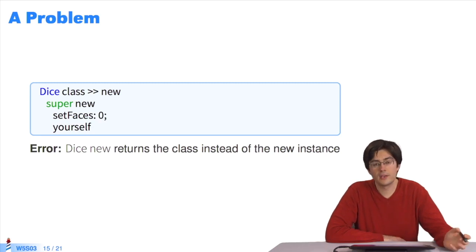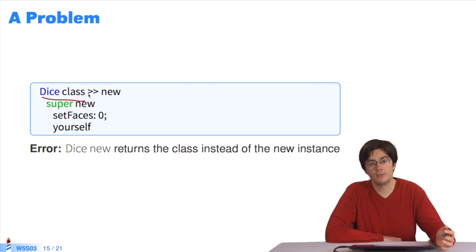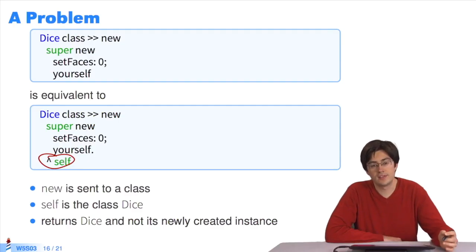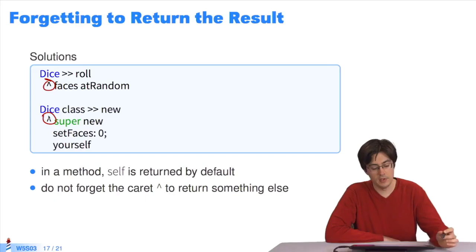Not the result of sending at random to the faces collection. So, the same problem in a slightly different example. Here, we are creating a new method in the dice class. So, in dice class, we want to make a new method to create instances in the dice class, which initializes by default the number of faces at zero. If we send the message new to the dice class, what we will get is the dice class itself, rather than a new instance of the dice class. So, in both cases, the fact that there is no return, and self by default is the receiver, in the case of a class method, self is the class. To correct these two problems, we just have to add the caret to return a specific value.